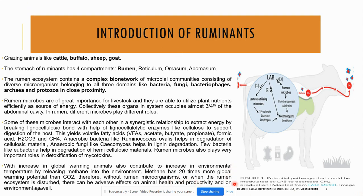They digest these materials and convert them into volatile fatty acids like acetate, butyrate, propionate, formic acid, carbonate, and methane, and different other gases are also present. One of the most important functions of these rumen microbes is that they play a very important role in the detoxification of mycotoxins if present in their feed.